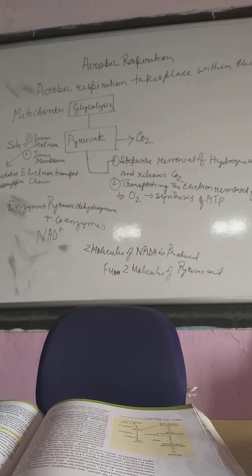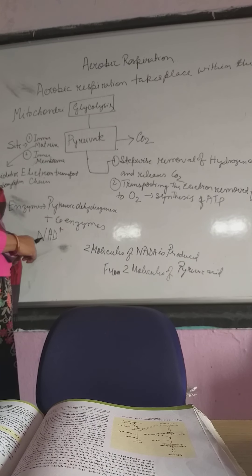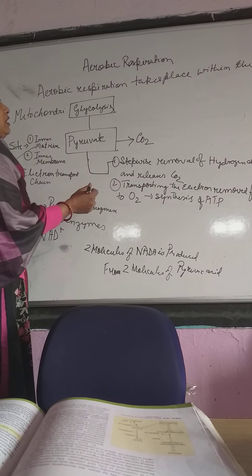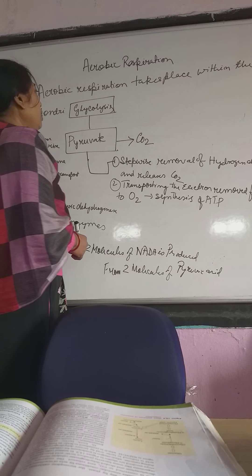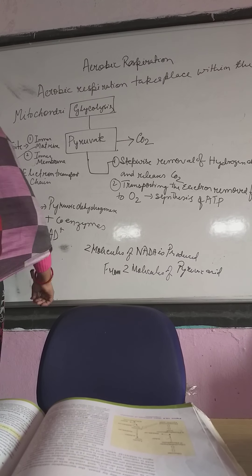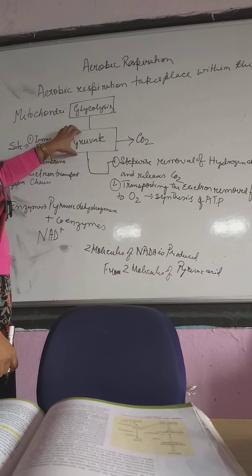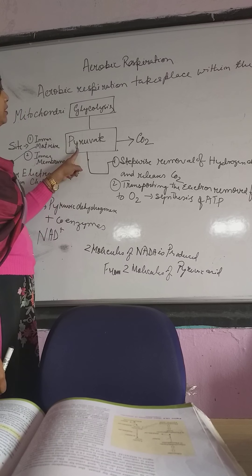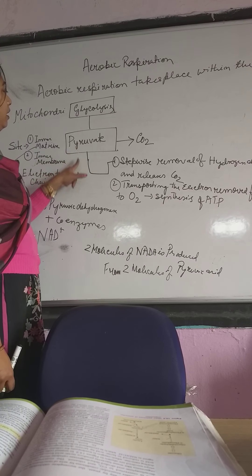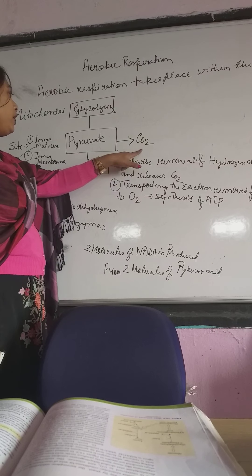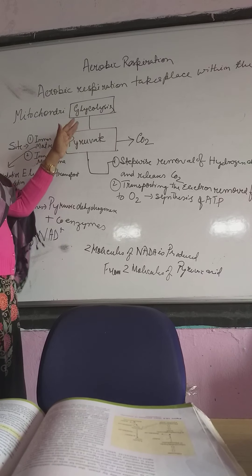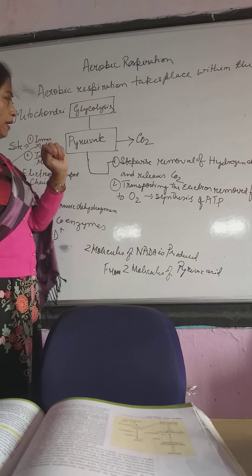Here we are dealing with aerobic respiration. Aerobic respiration takes place within the mitochondria. In earlier classes we dealt with glycolysis. During aerobic respiration, glucose is broken down into pyruvate, a three-carbon compound, and then this pyruvate has to be converted into carbon dioxide. Pyruvate is broken down to CO2 by two main processes.